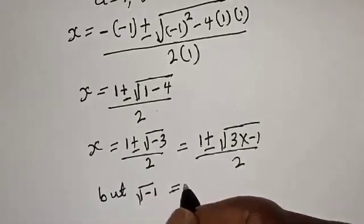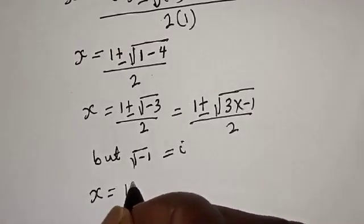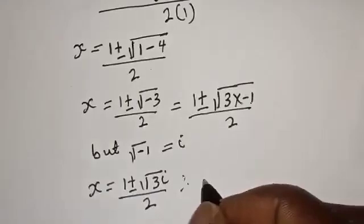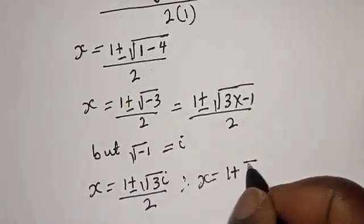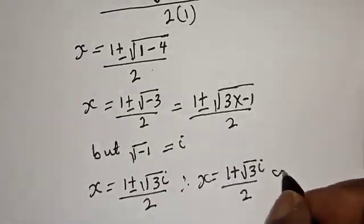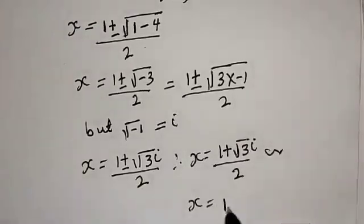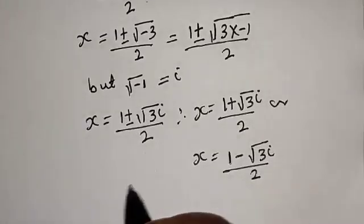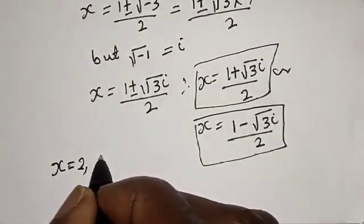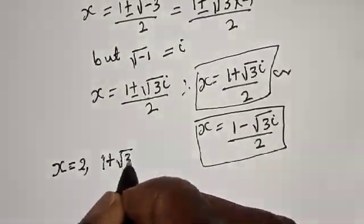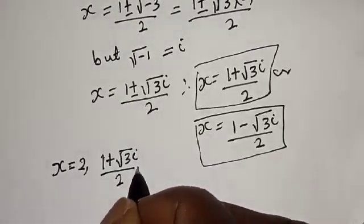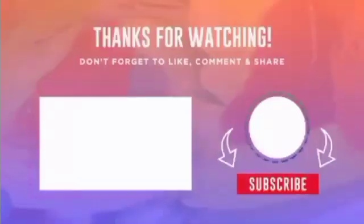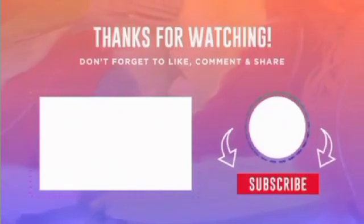Since square root of negative 1 equals i, we get s equals 1 plus or minus √3·i over 2. Therefore the two complex solutions are s equals (1 + √3·i) / 2 or s equals (1 - √3·i) / 2. If you enjoyed the class, please don't forget to like, share, comment, and subscribe. Thank you.